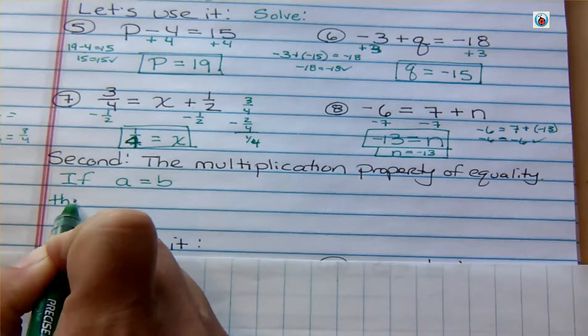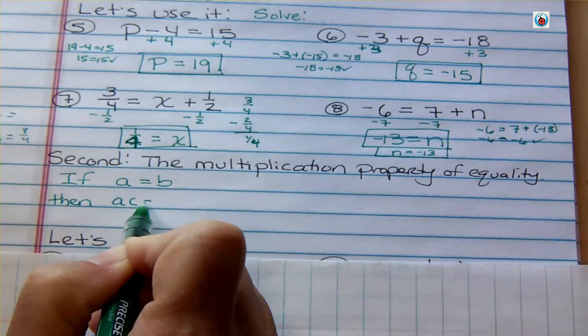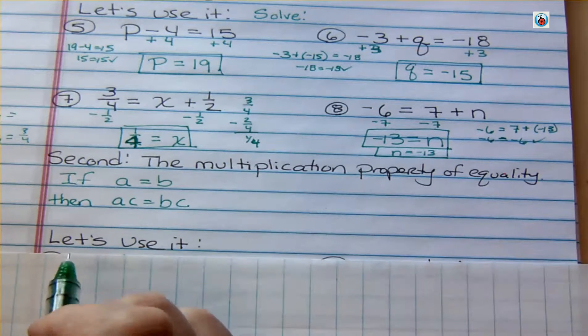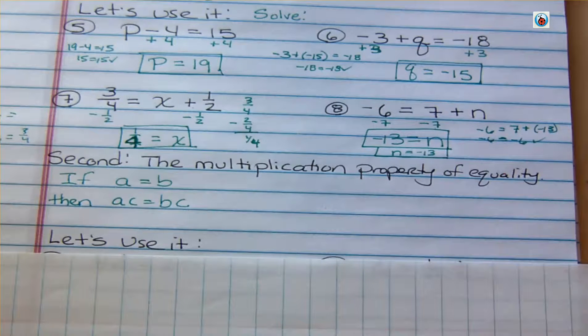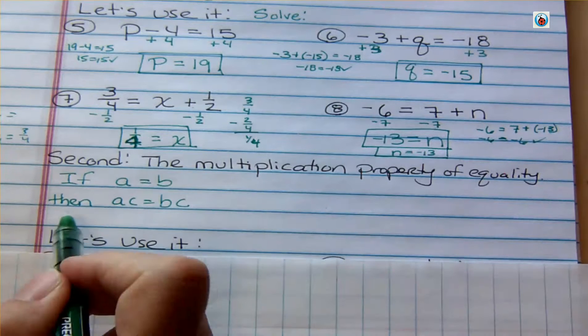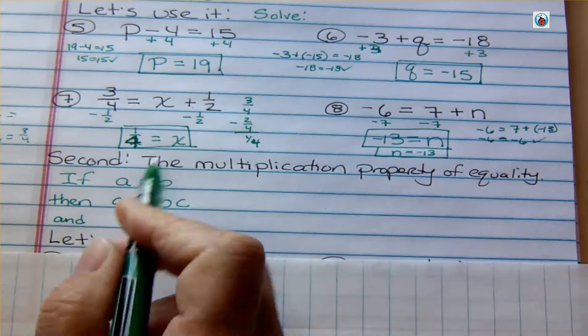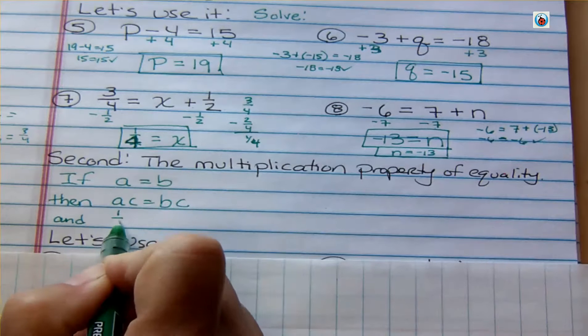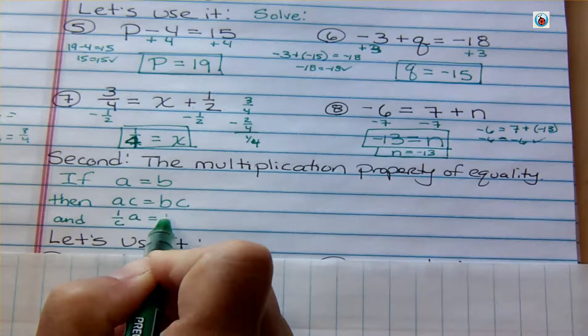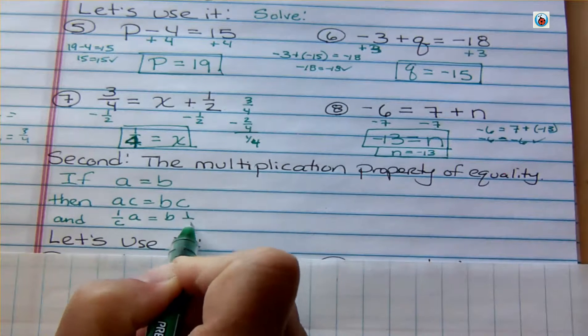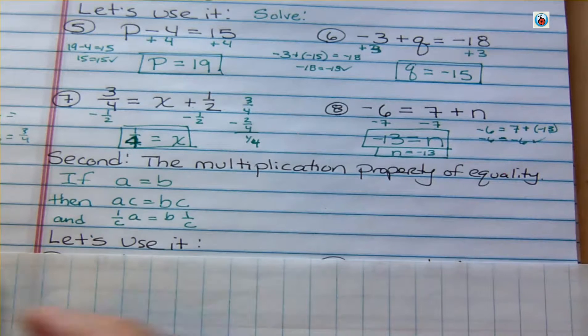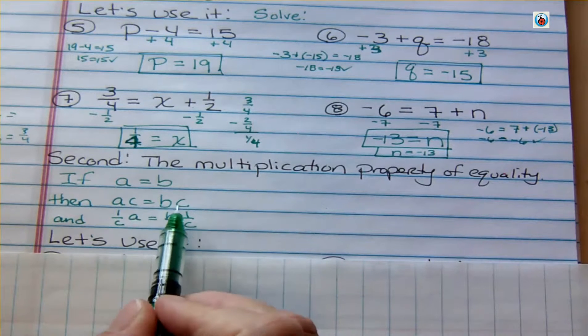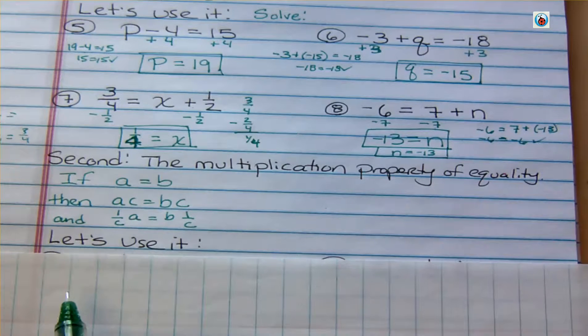We can multiply both sides of the equation by something, and it keeps it equal. So that's true, and also we could multiply it by a fraction, which is really the same as dividing it. If we multiply both sides by C or we multiply both sides by 1 over C, we also can get the same thing.